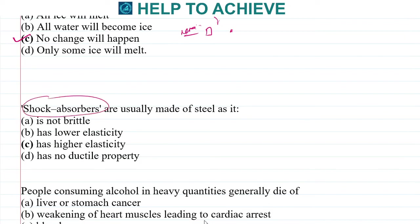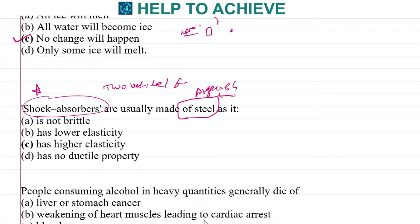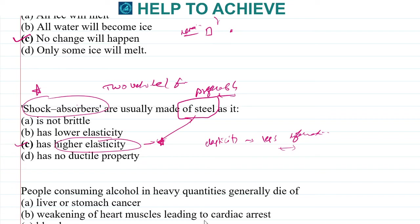Next: in two-wheelers and four-wheelers, shock absorbers are made up of steel. Steel is preferred for making shock absorbers because of its high elasticity. High elasticity means less deformation happens. So more elasticity leads to less deformation, which is why steel is used for making shock absorbers.